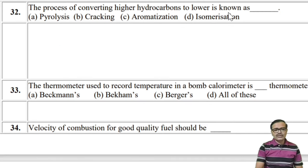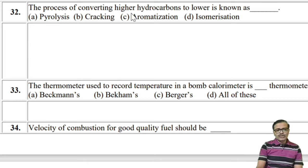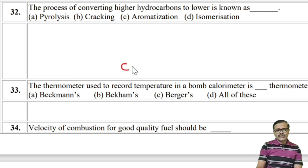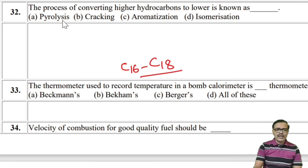The process of converting higher hydrocarbons into smaller ones is called cracking (pyrolysis). In petroleum refining, long-chain hydrocarbons like C16–C18 are broken into smaller products by cracking. The Beckman thermometer is used to record temperature in the bomb calorimeter.